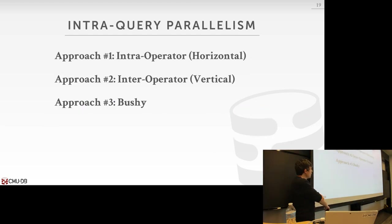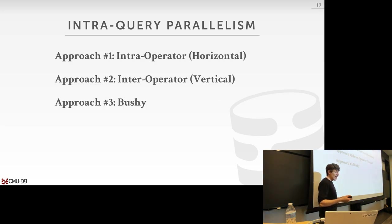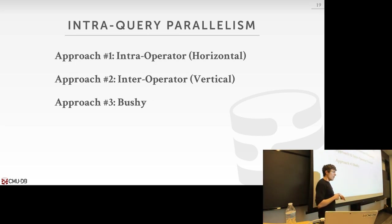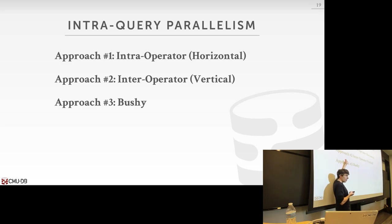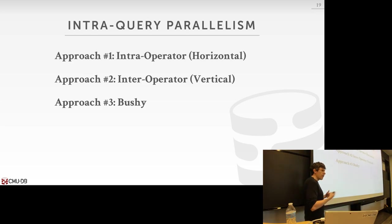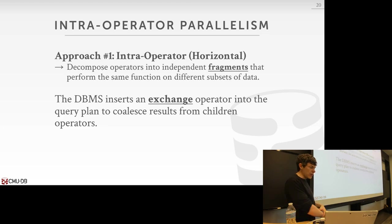Conceptually, consider the partitioned Grace hash join. We hash both the inner and outer tables into buckets at different levels. Now to run this in parallel, we simply assign a single worker to each level to perform its join and produce output. Similarly for sort-merge join, sequential scans — we break up the work and run it in parallel. The three types of intra-query parallelism are: intra-operator parallelism (horizontal), inter-operator parallelism (vertical), and bushy parallelism. These are not mutually exclusive — a database system can use a combination of all three.